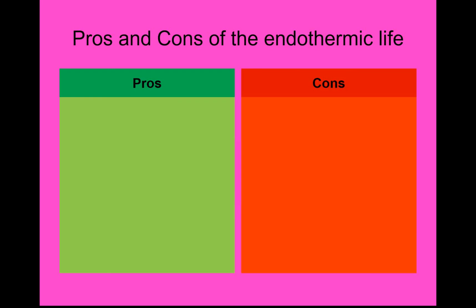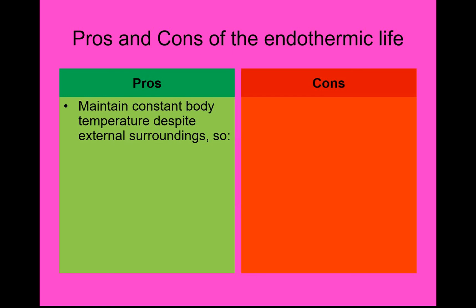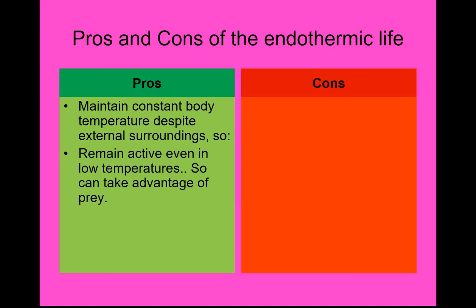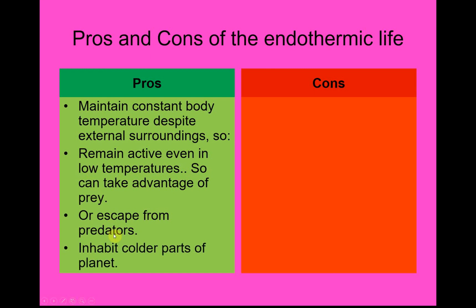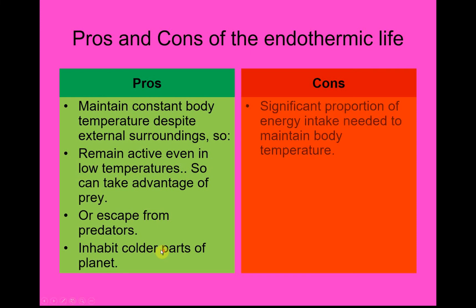Key pros: the whole point is you can maintain your body temperature despite the environmental surroundings. Some animals, like polar bears, can survive minus 50 degrees C in the external environment because of their evolved adaptations. This means you can be active even at low temperatures — you can take advantage of prey, cope with a range of temperatures, and escape from predators because you're still able to be active. You can also inhabit a wider variety of places around the planet, especially colder places.